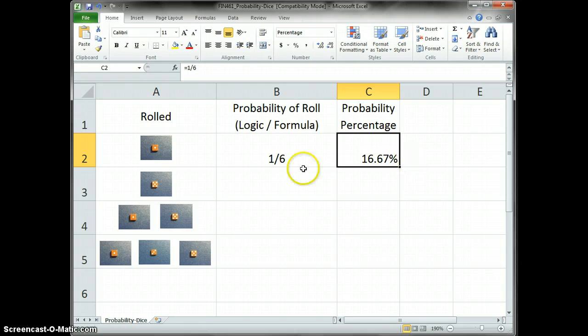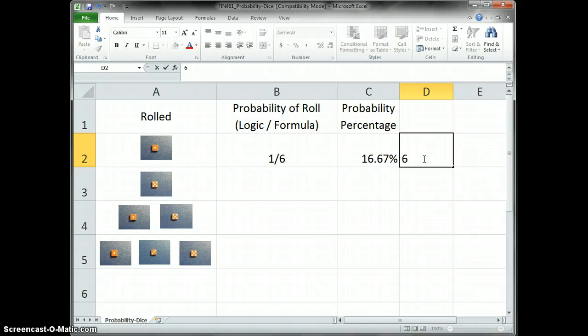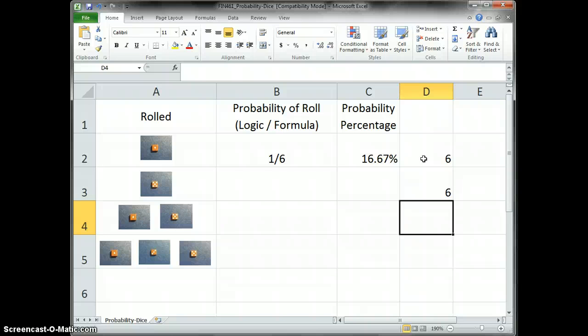But when I look at this, there's a logic that I'm seeing here. So with one dice, I have six chances. Now on this one, there's two dice. So the question is, do I have 12 chances? And down here, do I have 18 chances? But we're going to test that particular rationale mathematically.